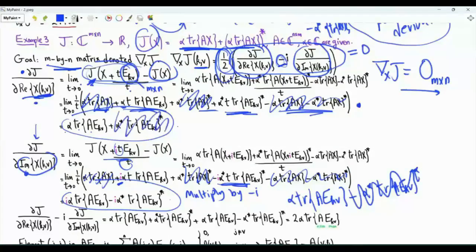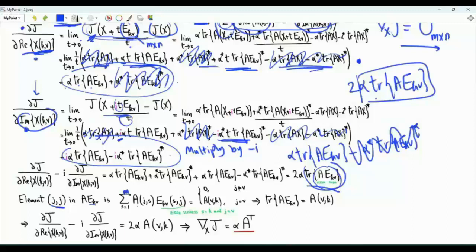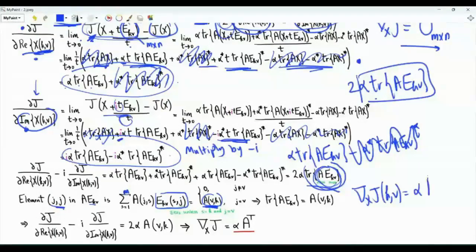Element KV in the output is (1/2) times [real-part derivative − i times imaginary-part derivative]. Multiplying the imaginary-part result by −i gives α·trace(A·E_KV) − α*·[trace(A·E_KV)]*; adding the real-part result, the conjugate terms cancel, leaving 2α·trace(A·E_KV). Multiplying by 1/2 gives α·trace(A·E_KV). To simplify, element JJ in the product A·E_KV is nonzero only when J=V, giving A_{VK}. Summing the diagonal gives trace(A·E_KV) = A_{VK}. Therefore element KV in the output matrix is α·A_{VK}, and the full output matrix is α·A^T.